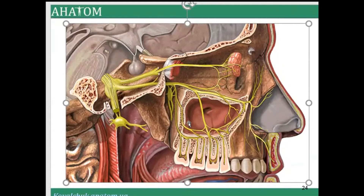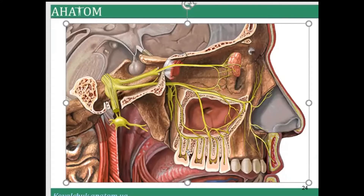The maxilla contains the maxillary sinus — the largest of the paranasal sinuses. There are four types of paranasal sinuses: in the frontal bone, the ethmoid bone, the sphenoid bone, and the maxillary bone. Inflammation of the maxillary sinus is called sinusitis or maxillary sinusitis. Because the maxillary nerve provides innervation to the teeth, inflammation in this cavity can cause significant pain in the upper teeth.